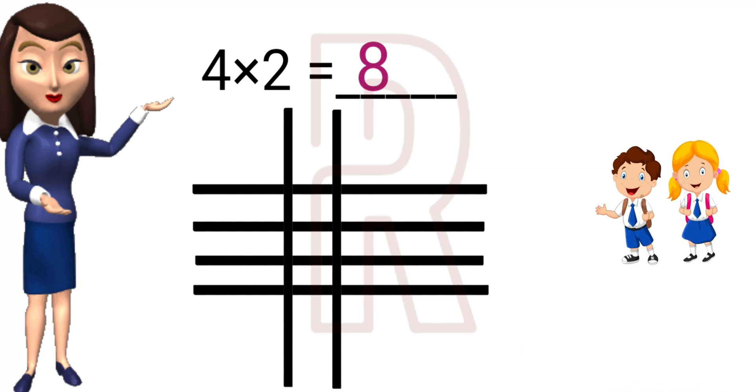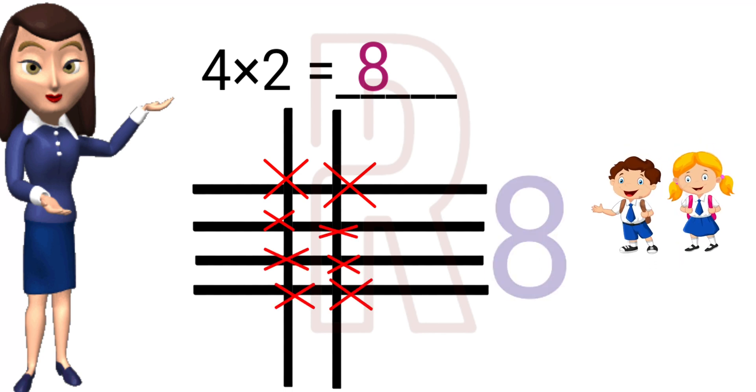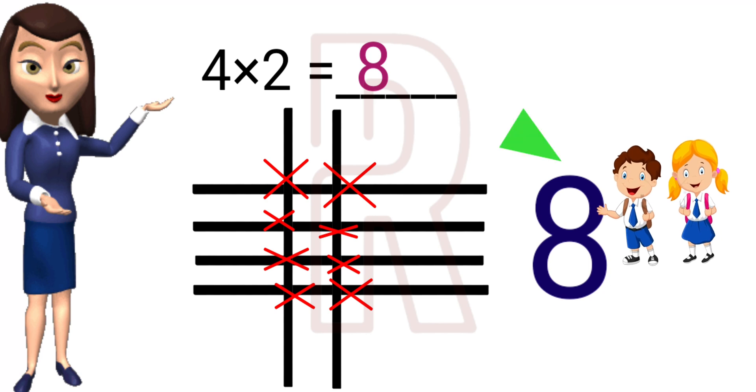And after drawing the horizontal and vertical lines, we have to count the number of intersecting points. 1, 2, 3, 4, 5, 6, 7, and 8. So number of intersecting points is 8. And our answer is also 8. That is 4 into 2 is 8.